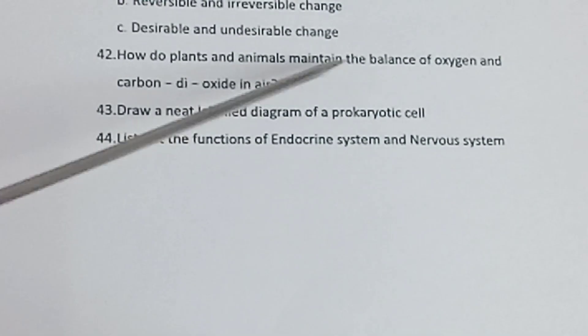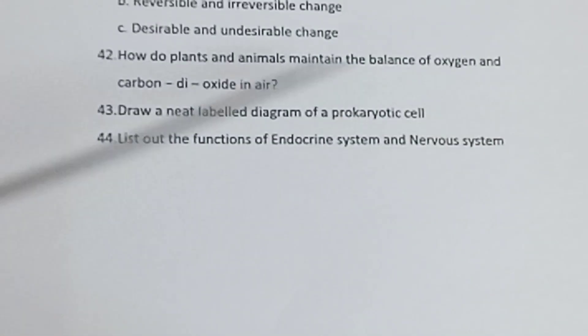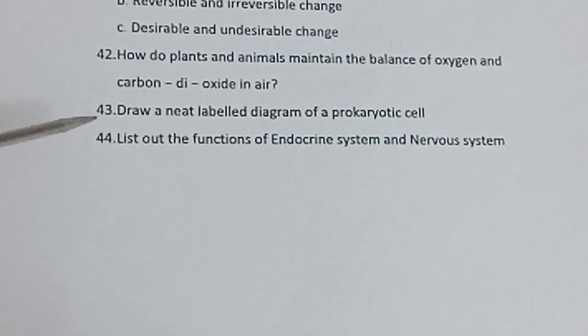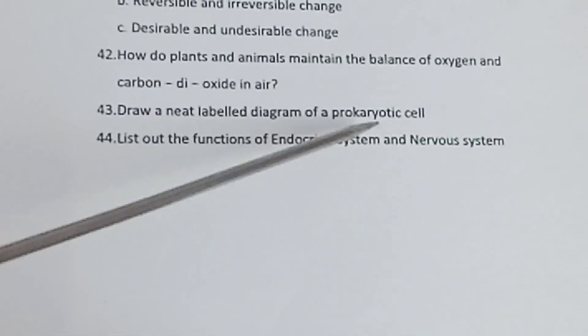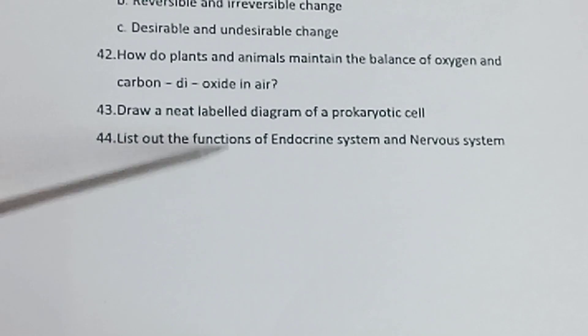Question 42: How do plants and animals maintain the balance of oxygen and carbon dioxide in air? Question 43: Draw a neat labeled diagram of a prokaryotic cell. Question 44: List out the functions of endocrine system and nervous system. All the best.